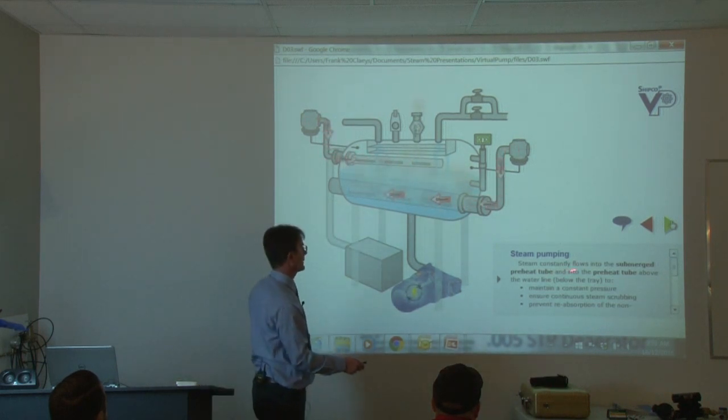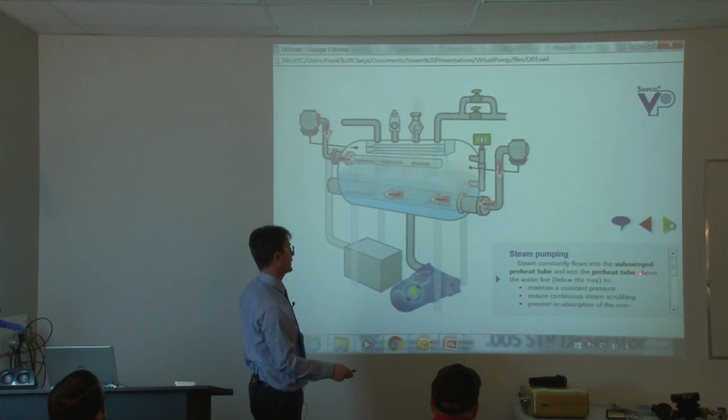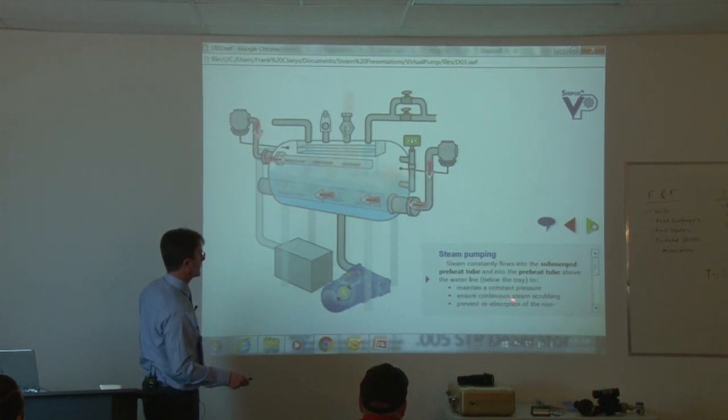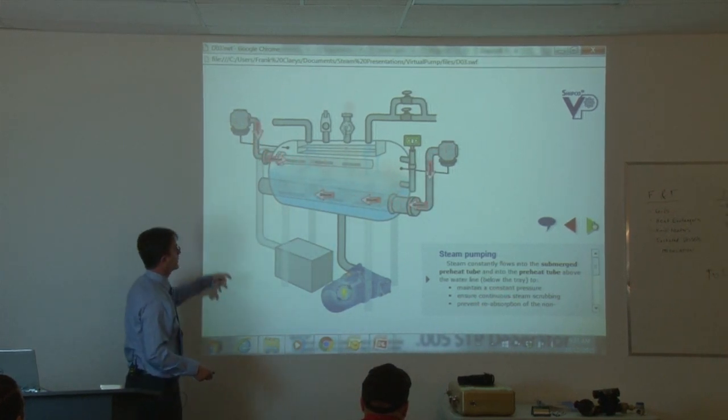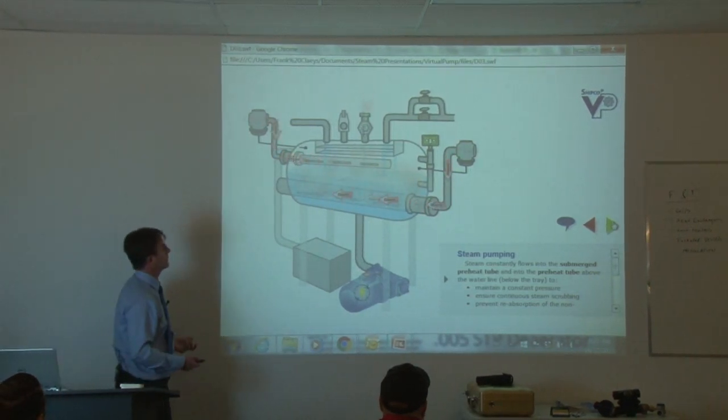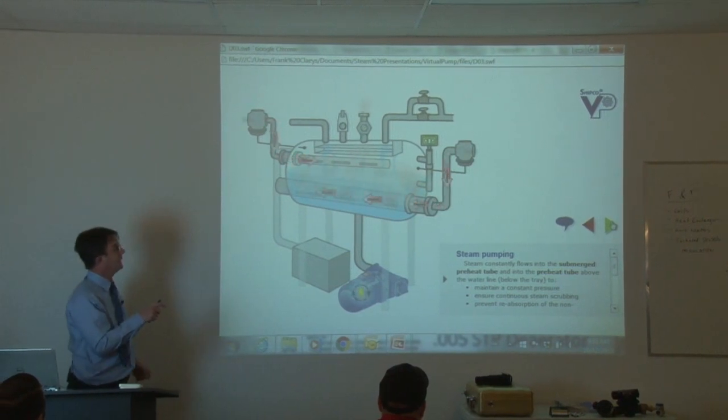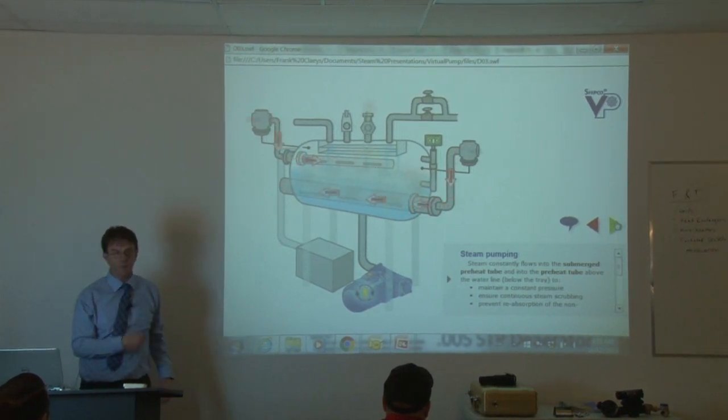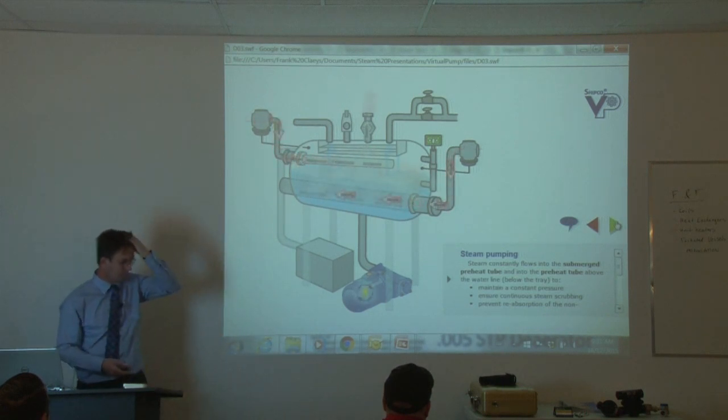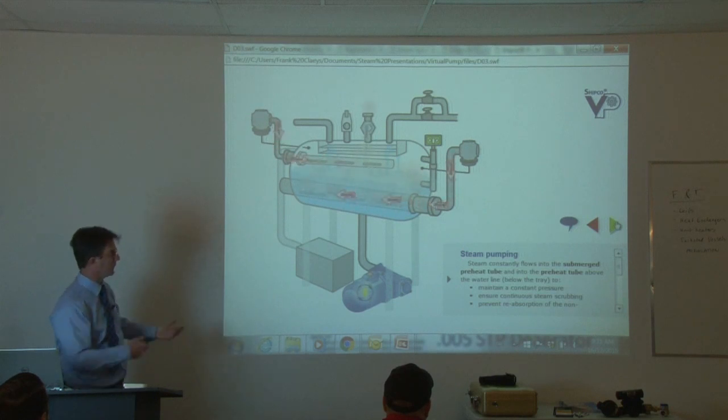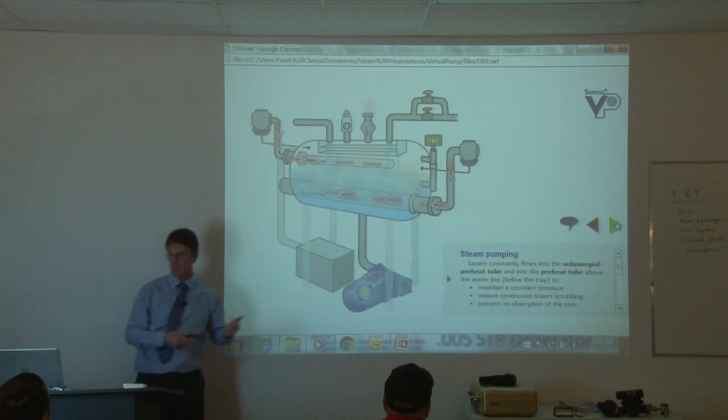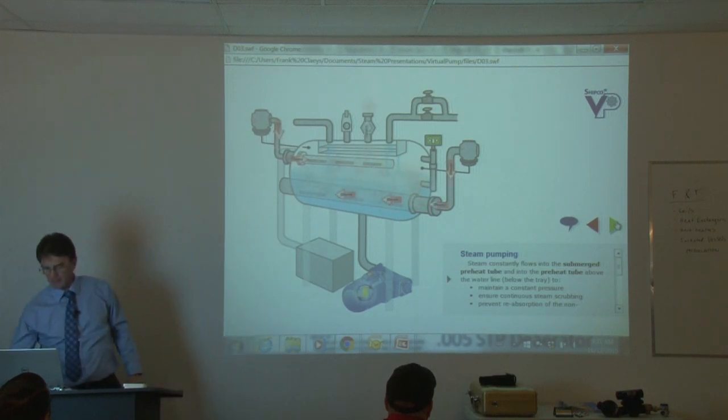We're driving up the temperature and we're pushing off the gases. So steam constantly flows into the submerged pre-heat tube and into the pre-heat tube above the water line. That maintains a constant pressure, ensure continuous steam scrubbing, prevent reabsorption of non-condensable gases. So in this case, it's a pressurized de-aerator. So we drive the temperature up even further. So when you pressurize the tank, you can drive the temperature up. So the higher the pressure, the higher the temperature. And that's something that we'll get into in a few slides. We talk about the relationship between pressure and temperature.